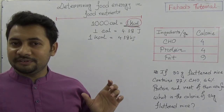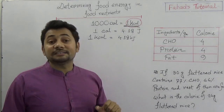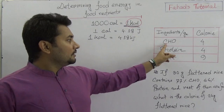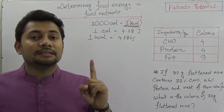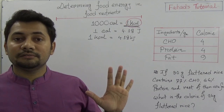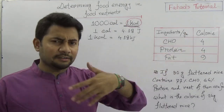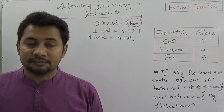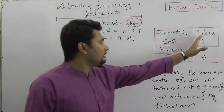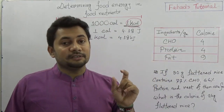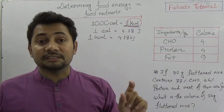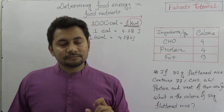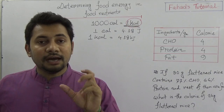Now think about the calorie per gram for each ingredient. One gram of carbohydrate gives four kilocalories. One gram of protein gives four kilocalories. And one gram of fat gives nine kilocalories. So: carbohydrate = 4, protein = 4, fat = 9 — we need to think about how to determine the total food energy using these values.